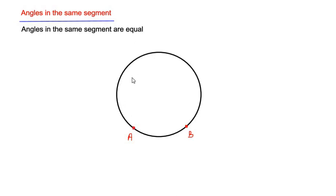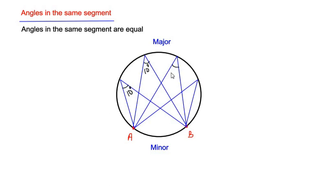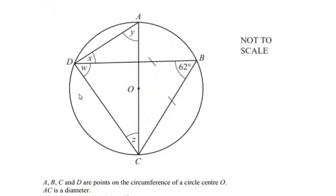To illustrate this theorem: two points A and B divide the circle into a minor segment and a major segment. Any angles formed at points on the major segment by the chord AB are all equal. For example, if one angle is 10 degrees, all other angles subtended by AB in the same segment are also 10 degrees.